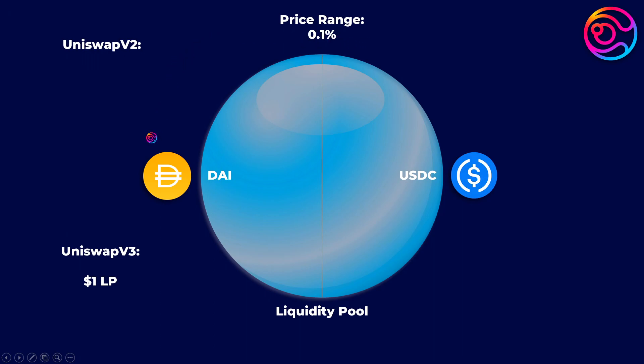...concentrated liquidity can provide as high as 4,000 times greater capital efficiency than Uniswap V2. This would make $1 of Uniswap V3 liquidity just as powerful as $4,000 of Uniswap V2 liquidity when providing that liquidity within a 0.1% price range.